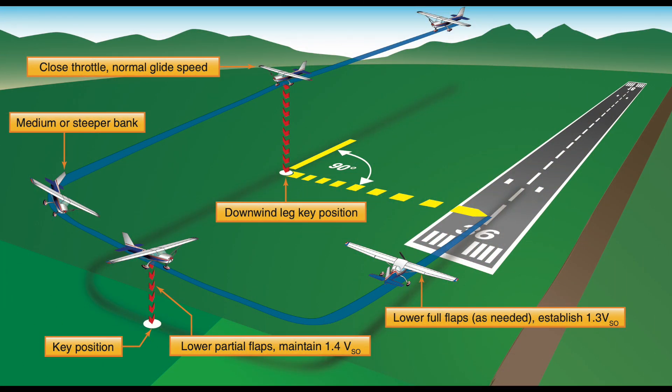For a normal landing pattern, we assume the wind is down the runway. We always land into the wind — hence the term downwind, which means we're going with the wind. In this case, we do a left turn, so it's a left-hand pattern to a base leg, 90 degrees to the runway, then another 90-degree turn and we're on final approach to the runway.